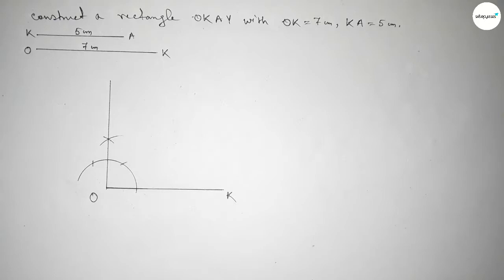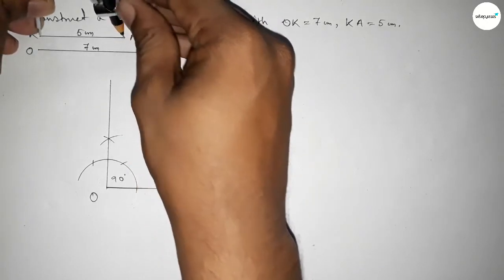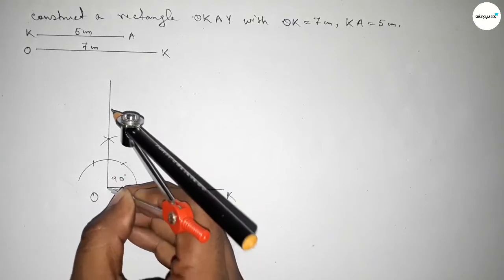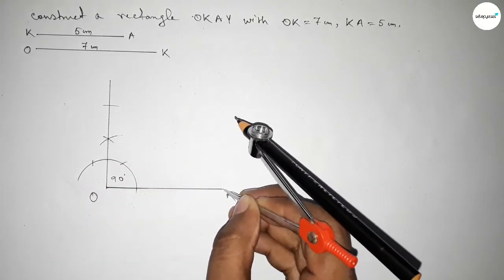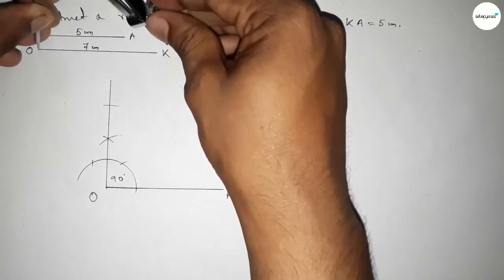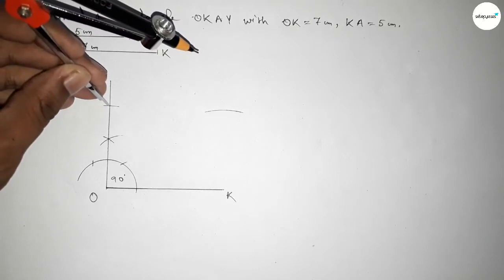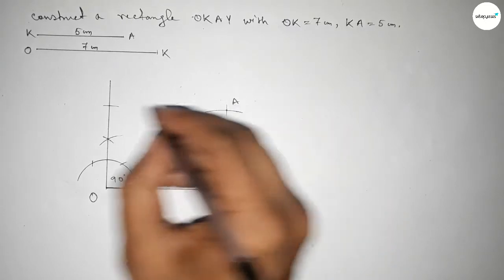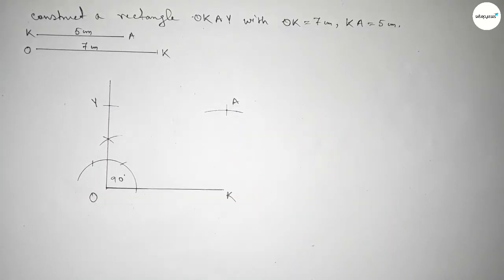Joining this to get a 90 degree angle. Now taking the length 5 centimeters, putting the compass on point O and cutting here with the same length. Then taking the length 7 centimeters using the compass, putting the compass here and cutting — both curves intersect at a point.